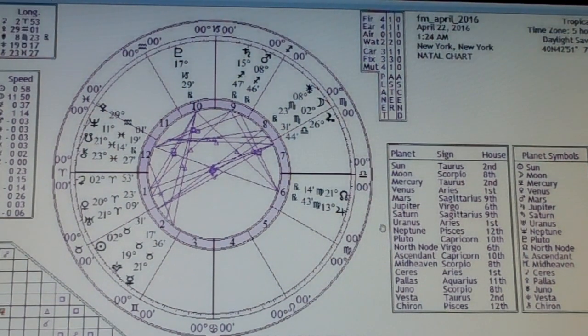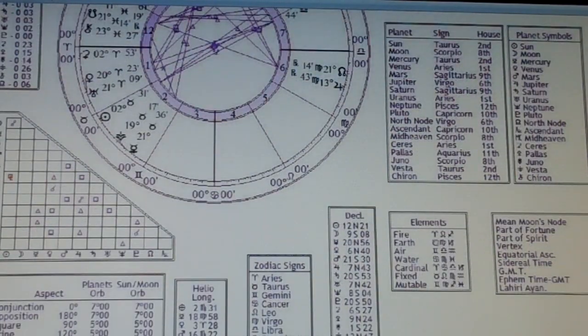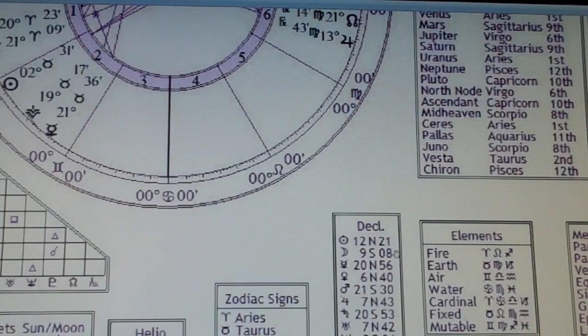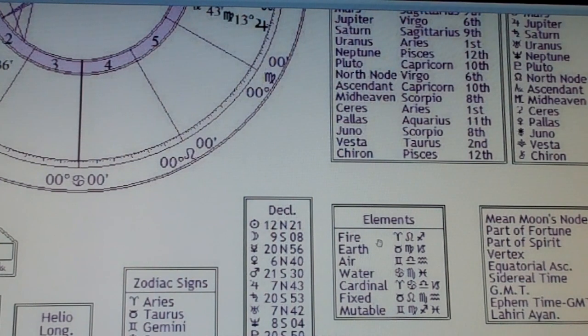Another thing we can do: elements. Each planet is either fire, earth, air, or water. Here are the fire signs: Aries, Leo, Sagittarius. Earth is Taurus, Capricorn, Virgo. Air is Gemini, Libra, Aquarius. Water is Cancer, Scorpio, Pisces.